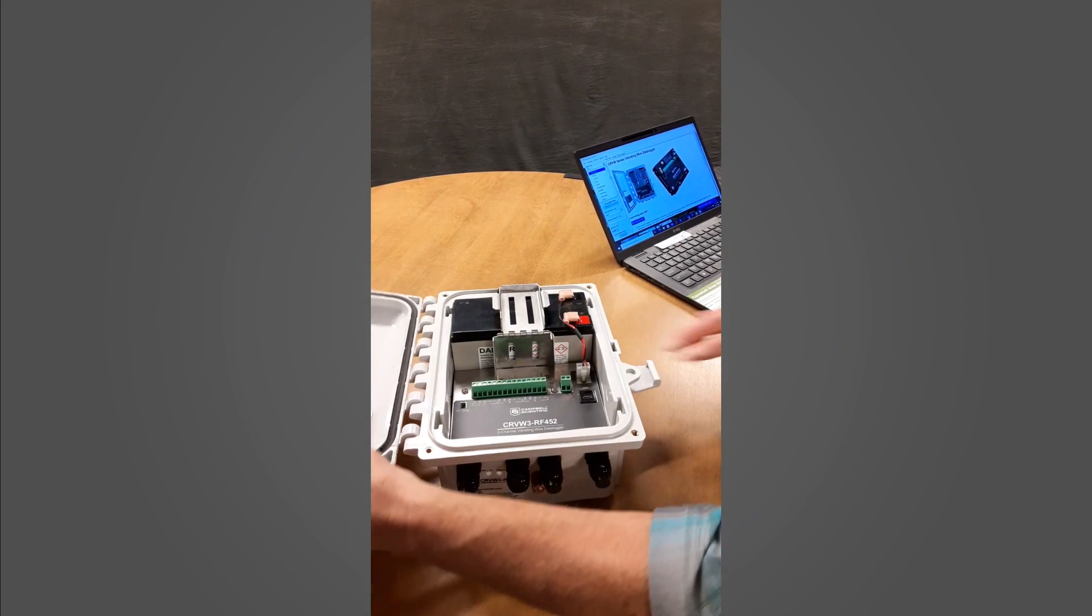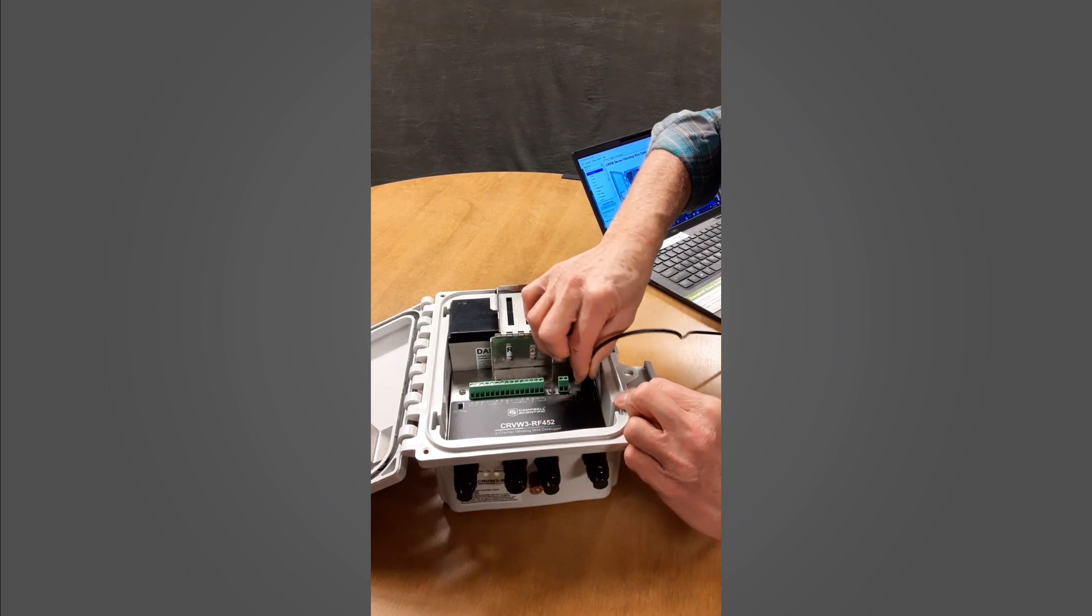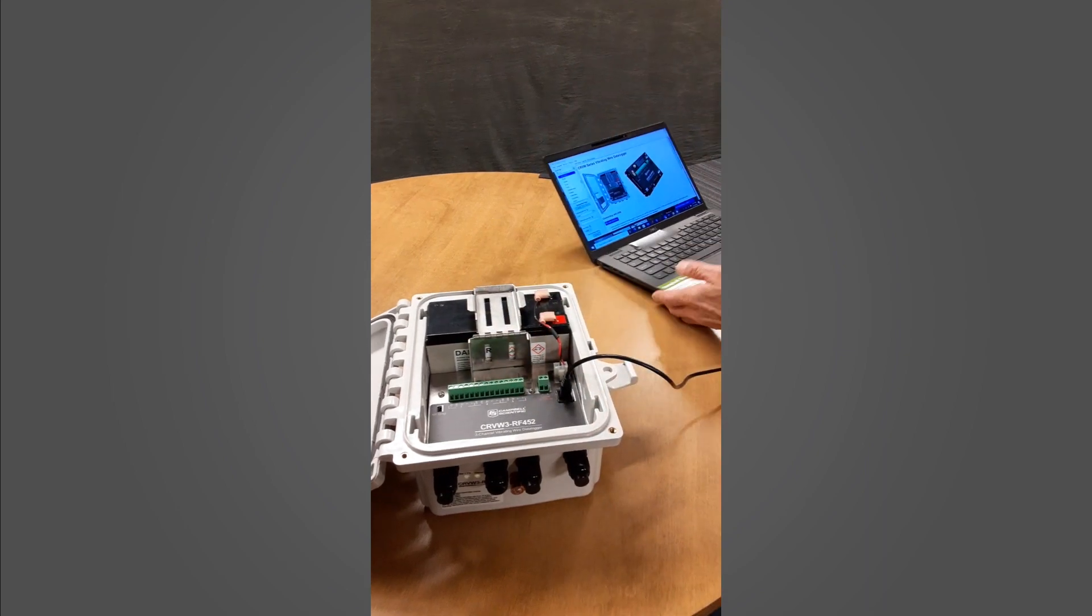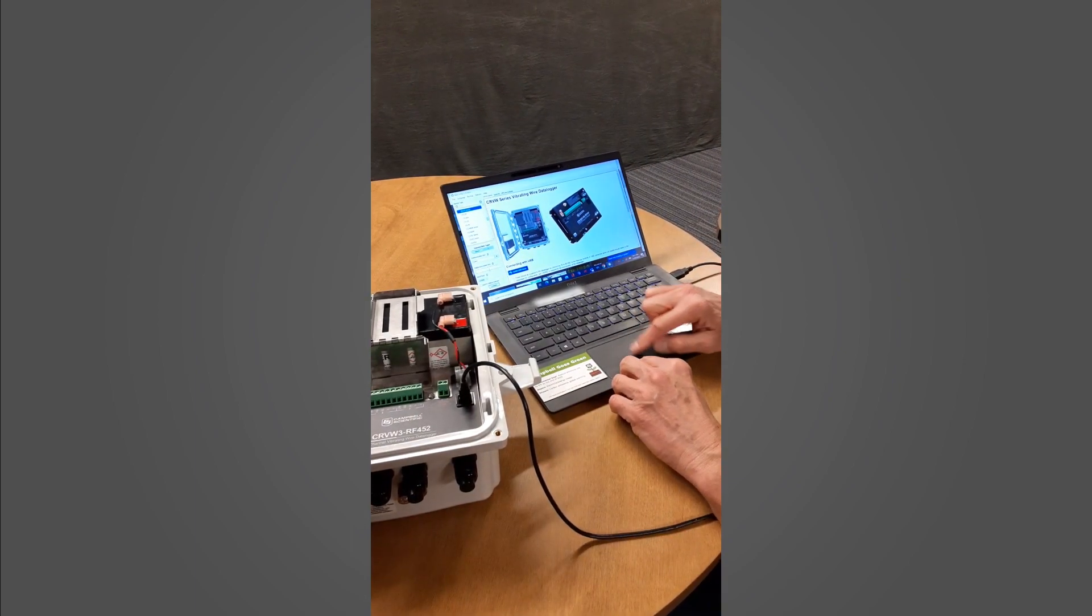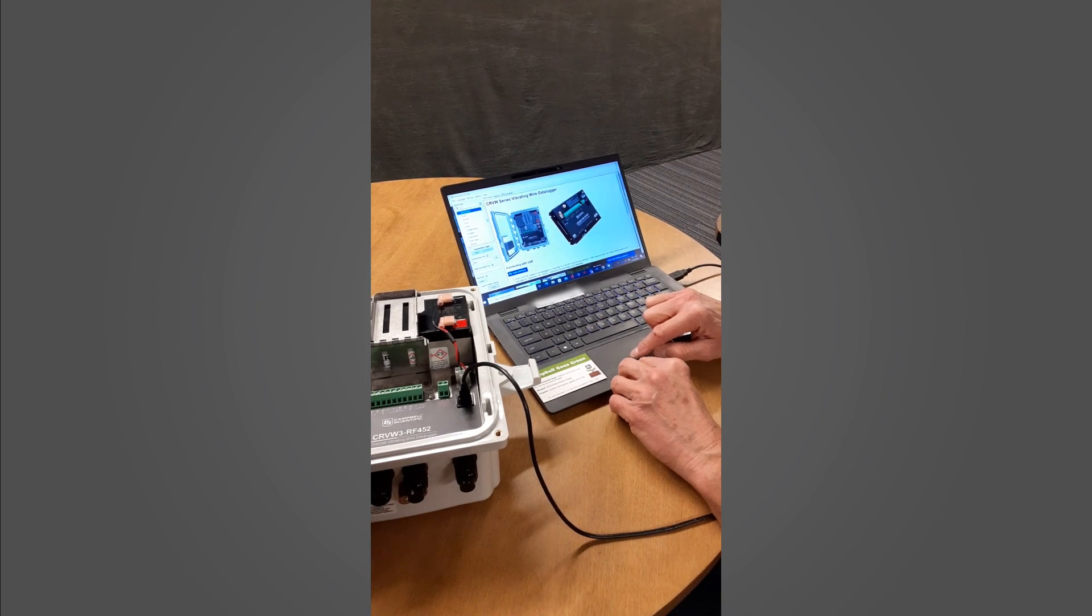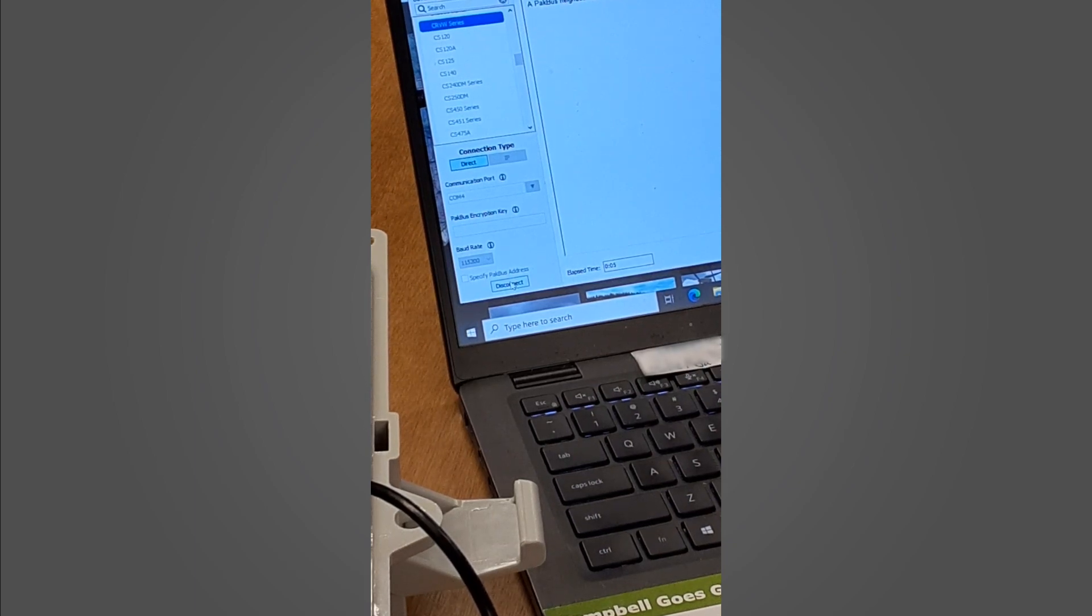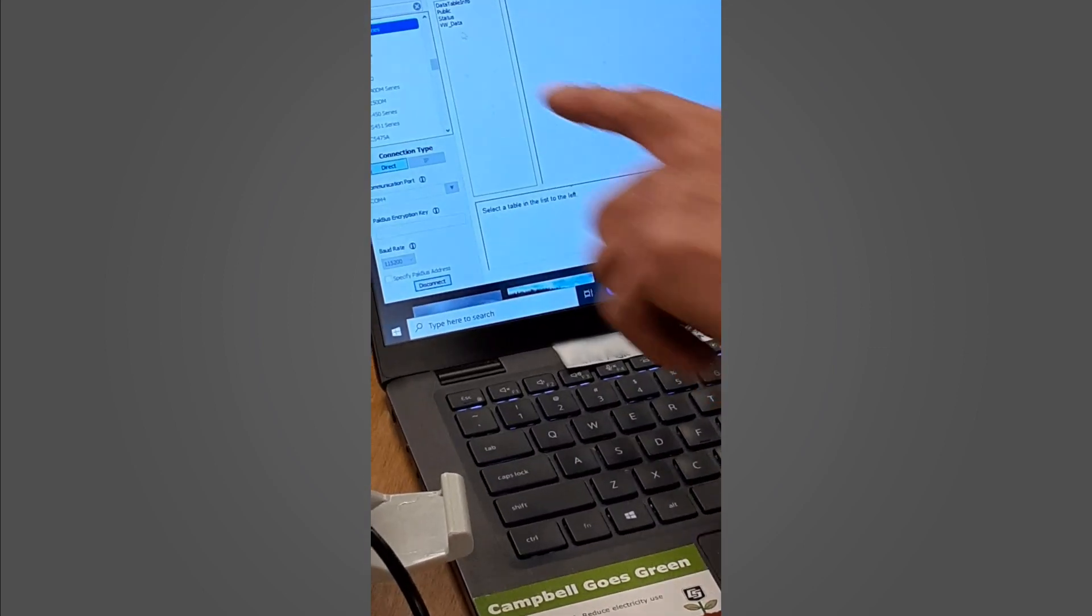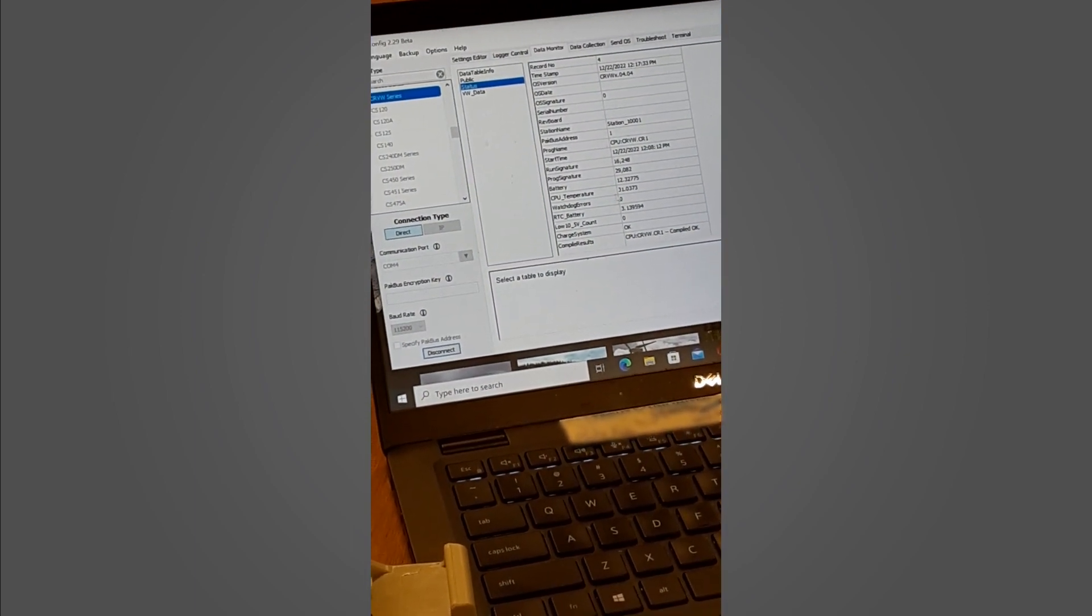We'll show you how to check your lithium battery. We're using our device configuration software, selecting the COM port and connecting. Once it has found the CRBW3 and pulled up the information, in the data monitor we look at the status table for the RTC battery right here.